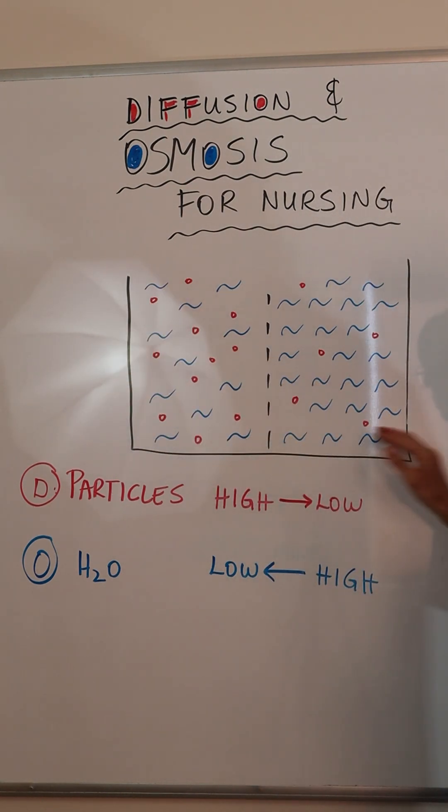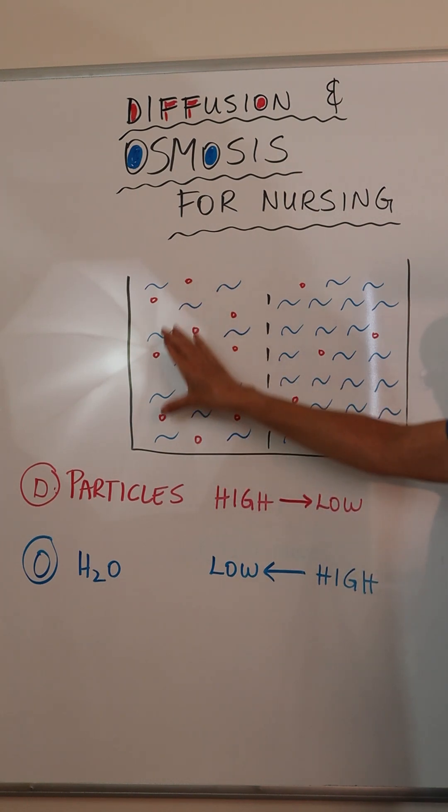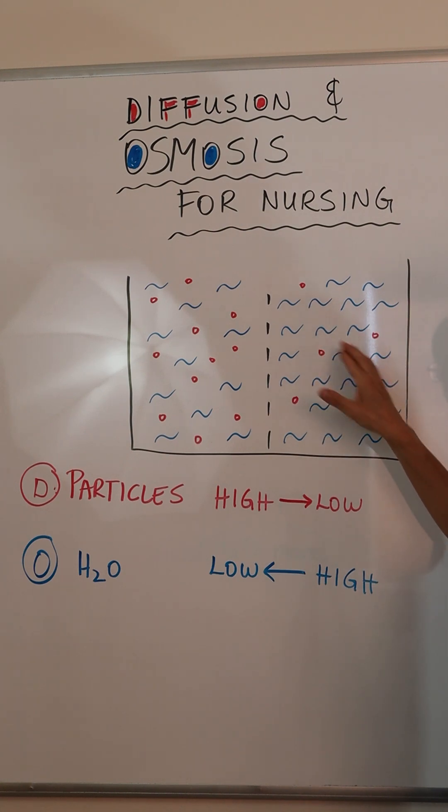In this beaker, separated by a semi-permeable membrane that represents the cell membrane, we have on the left side a higher concentration of particles in red and a lower concentration of water in blue. On the right side we have a lower concentration of particles and a higher concentration of water.